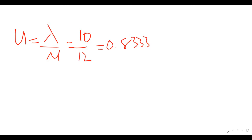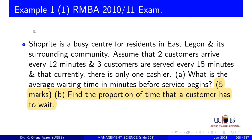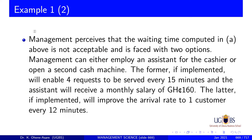Now I want to go back to the entire storyline, because the key point is where we are coming to. Management perceives that the waiting time computed — which was 25 minutes — is not acceptable, and it's faced with two options. Management has got to reduce that waiting time. Why do people have to wait 25 minutes to be served? So management has a choice: they can either employ an assistant for the cashier, or open a second cash machine.